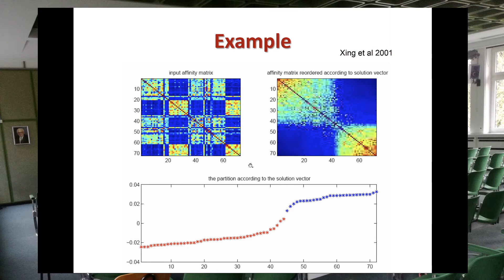This is an example with a data set where they run normalized cut. This data set contains 70 points. This is how the affinity matrix or similarity matrix looked before solving the optimization problem, and this is once we have computed the second eigenvector and ordered the points from smallest to largest eigenvalue. You can see here that there are two blocks — each of these blocks defines a group of points, so from point 1 to roughly point 14 they all belong to one group.